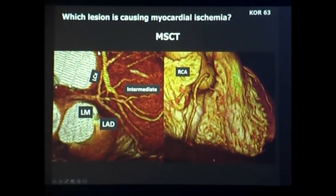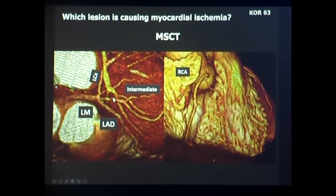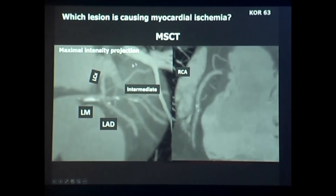Here is a case on volume rendering. We have a main stem that doesn't look very fit, a proximal LAD with a small nodule of calcium, a trifurcation with the intermediate which is narrow and calcified. The circumflex looks okay, and the obtuse marginal looks okay — hidden by the great cardiac vein. In the right coronary artery we have two tiny nodules of calcium. Going to maximal intensity projection, you realize that the main stem is diseased, the nodule at the base of the LAD is an issue, and the intermediate is indeed narrow and calcified. The two calcium nodules in the RCA do not seem too bad.